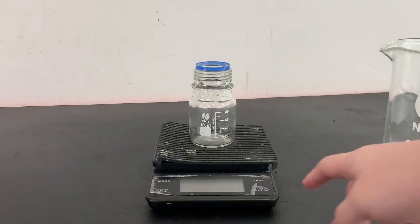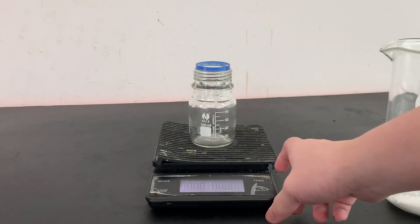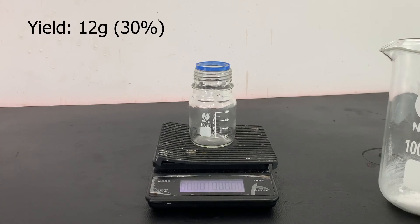The wet 3-nitrophthalic acid was then dried in the oven for a few hours and the yield was measured. The yield came to be low at around 12 grams of product. A low yield like this should be expected as this reaction mainly produces 4-nitrophthalic acid.